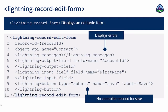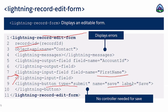After lightning record form, we can use lightning record edit form just to edit the data — which object data you want to edit and which record data you want to edit. Then you open the field with an input field to edit that field value, and you can add a button to perform the save operation. So you don't need a controller to save data — data will be saved just by adding the button. And if you want to show a toast, you can call utils.showToast in the controller. But just to save, you don't need any JavaScript code. That is the advantage of record edit form.